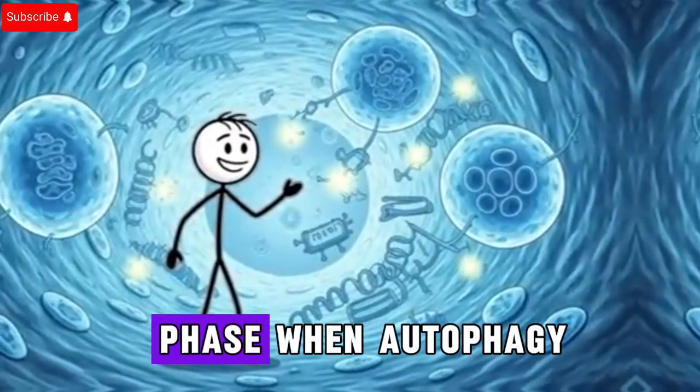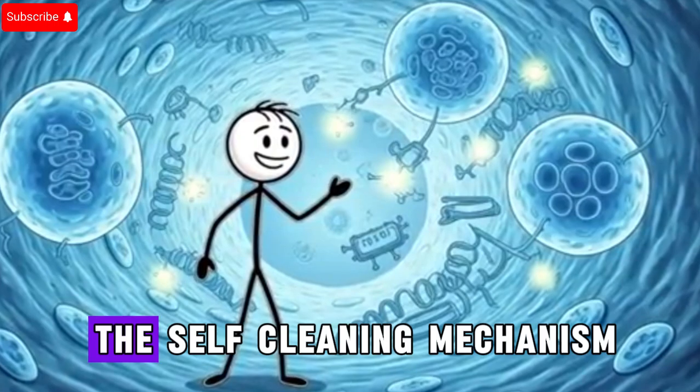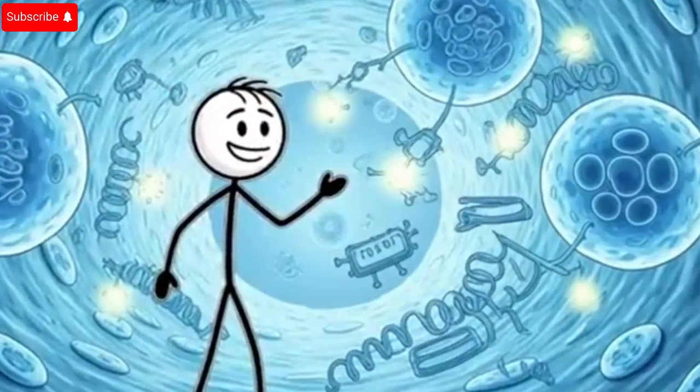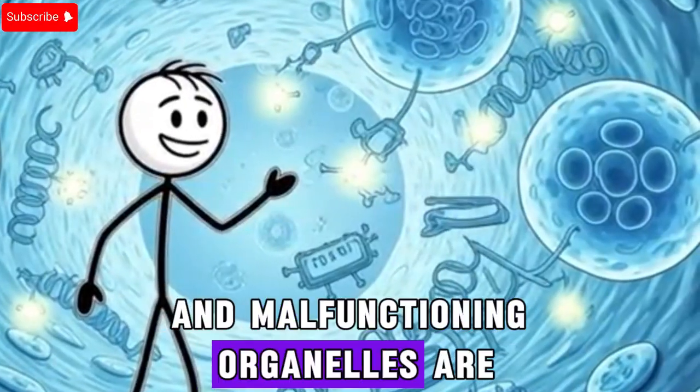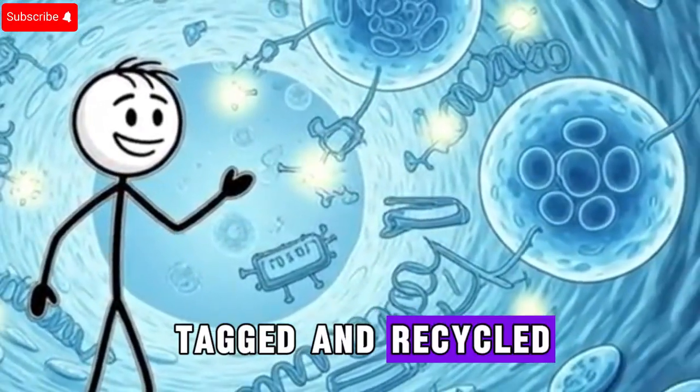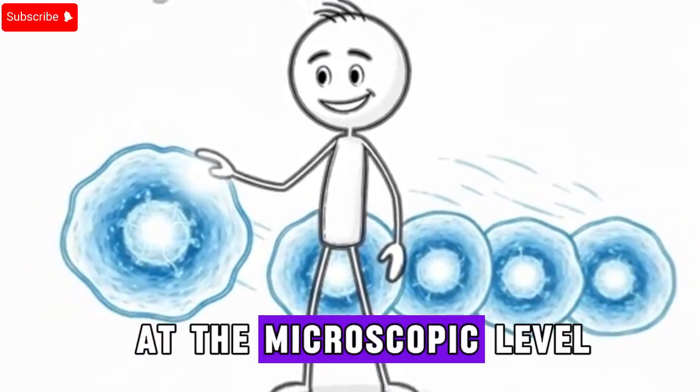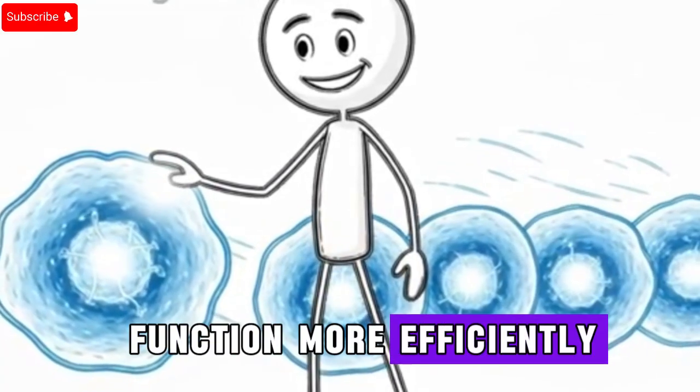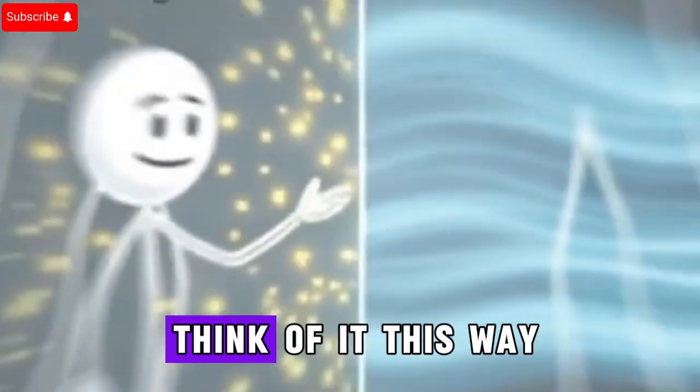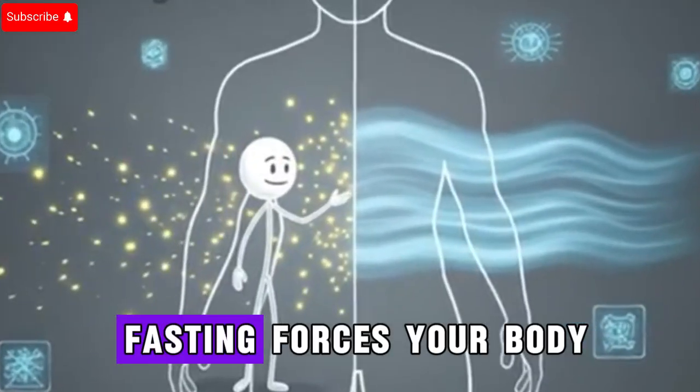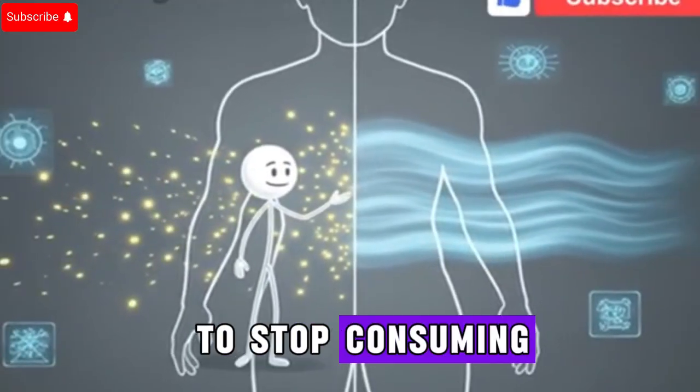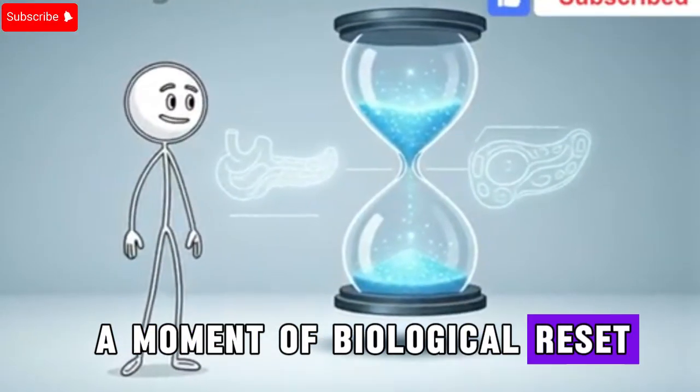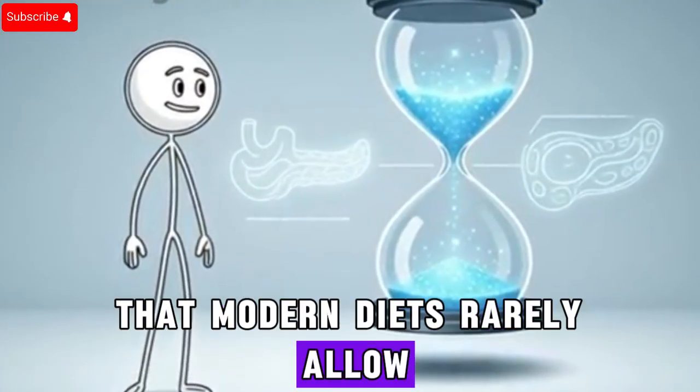This is also the phase when autophagy, the self-cleaning mechanism of cells, starts to stir. Damaged proteins and malfunctioning organelles are tagged and recycled. It's like spring cleaning at the microscopic level, preparing your cells to function more efficiently once normal eating resumes. Think of it this way: fasting forces your body to stop consuming and start repairing. It's a moment of biological reset that modern diets rarely allow.